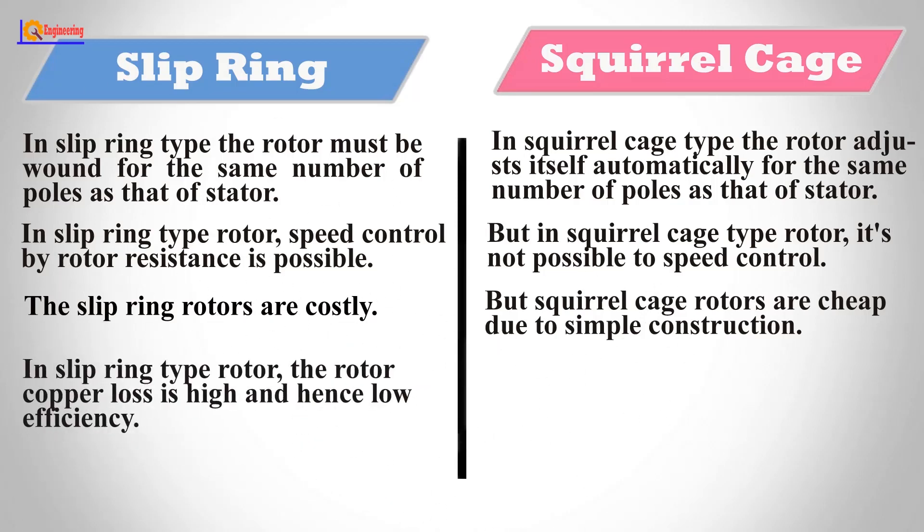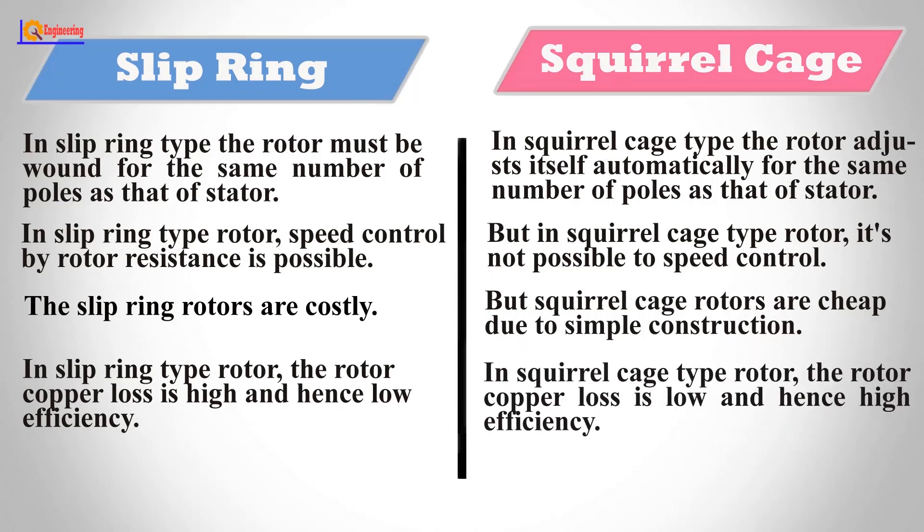In slip ring type rotor, the rotor copper loss is high and hence low efficiency. In squirrel cage type rotor, the rotor copper loss is low and hence high efficiency.